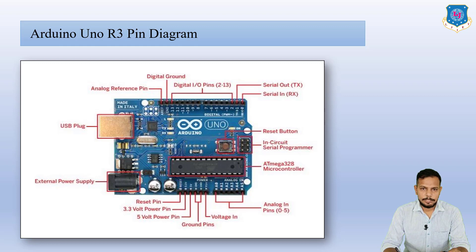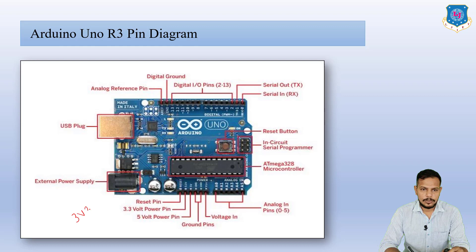The reset pin allows you to reset your program. There is also the ATmega328 microcontroller, analog pins 0 to 5 giving 6 pins, voltage in, ground pins, 5V power in, and 3.3V power in. The 3.3 means it is 3.3 volt power.